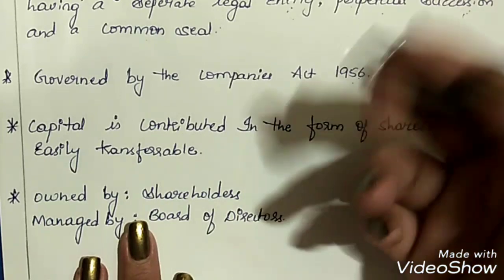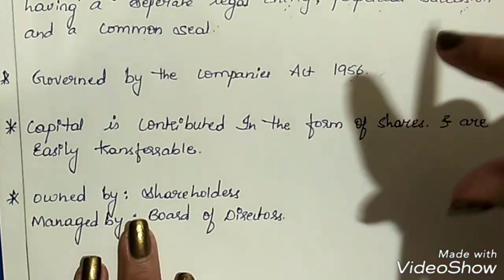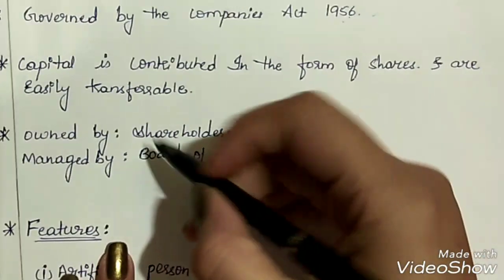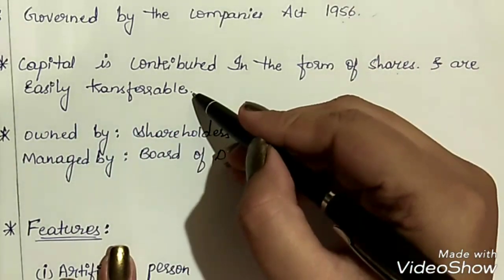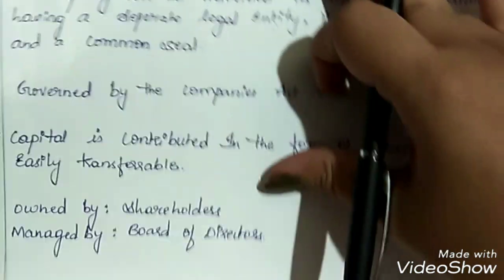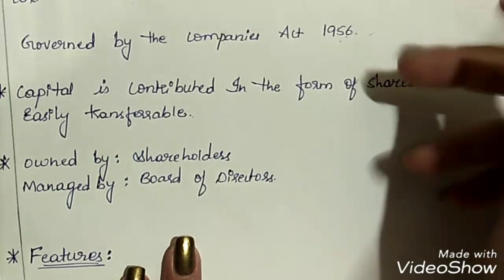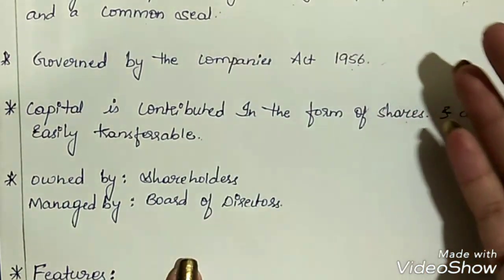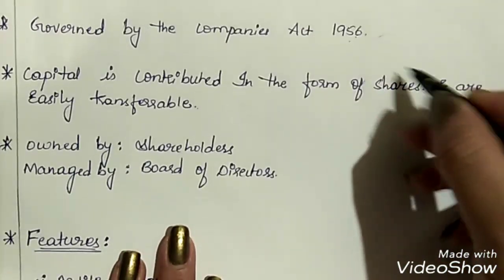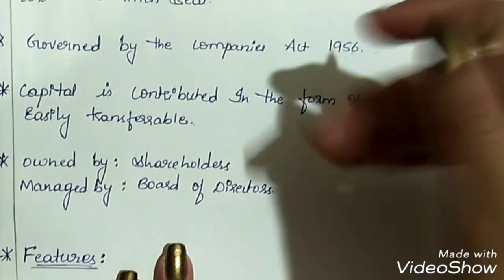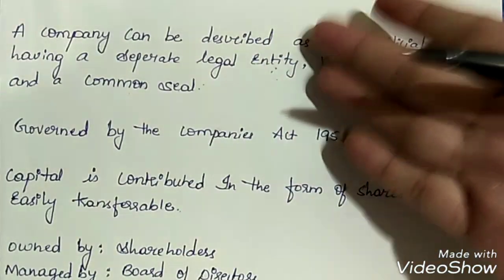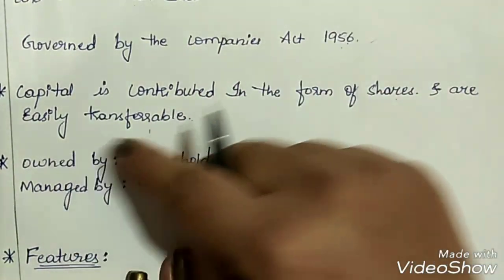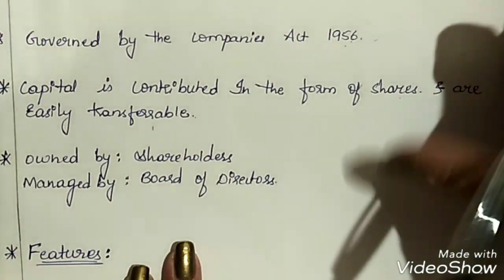This act has been updated and changed to Companies Act 2013. Many rules and regulations have been changed and amendments have also been made. Capital is contributed in the form of shares and they are easily transferable. Shares are monetary instruments used to pool capital from members. Members who purchase shares become owners of the company, and if any person loses interest, they can easily transfer their shares to others.